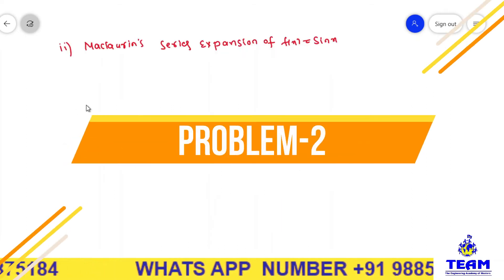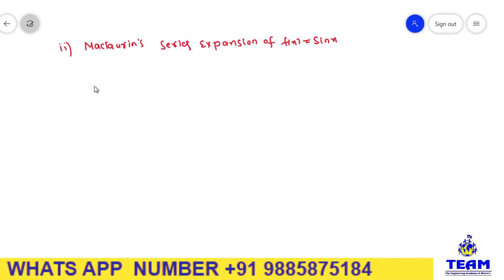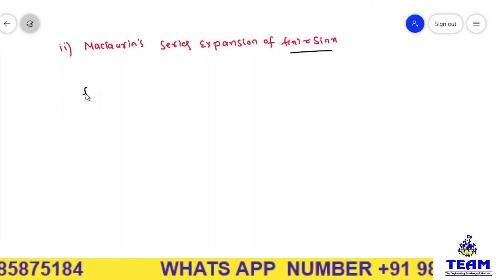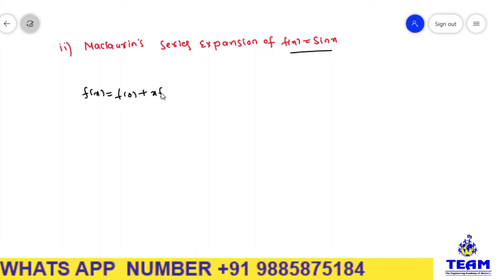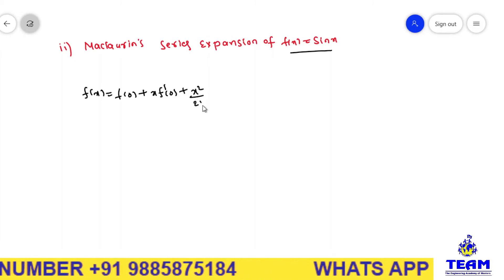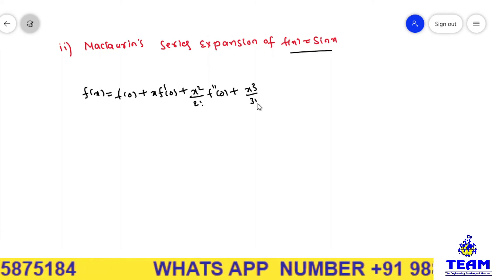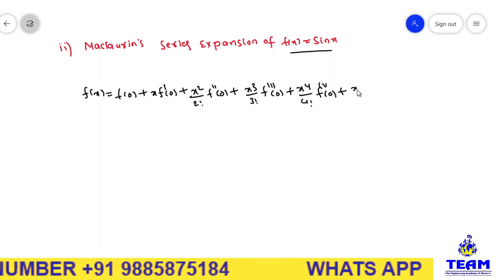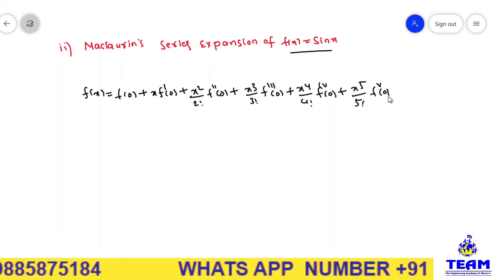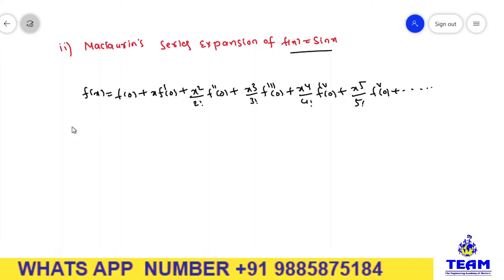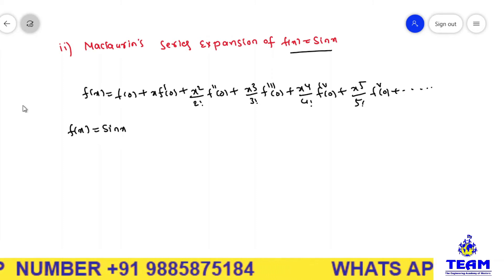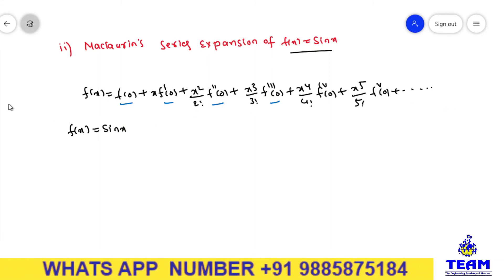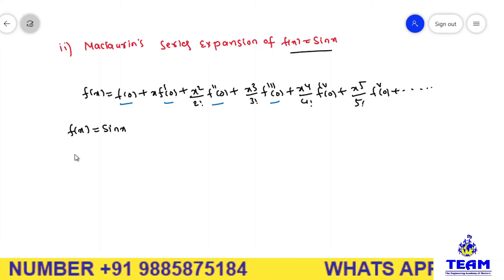Similarly, now we are finding the Maclaurin series expansion of f(x) = sin(x). From the Maclaurin series expansion: f(x) = f(0) + x·f'(0) + x²/2!·f''(0) + x³/3!·f'''(0) + x⁴/4!·f''''(0) + x⁵/5!·f'''''(0) + ... To simplify this, we need to find the derivatives and evaluate at x = 0.